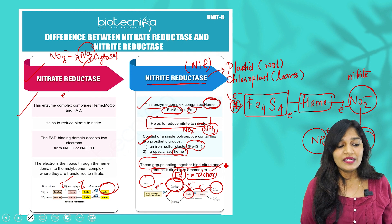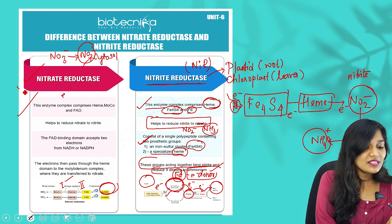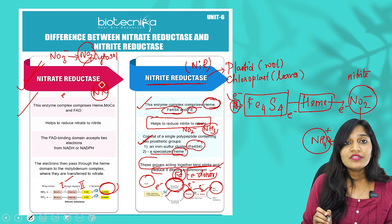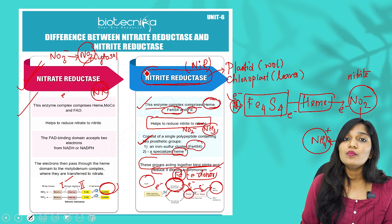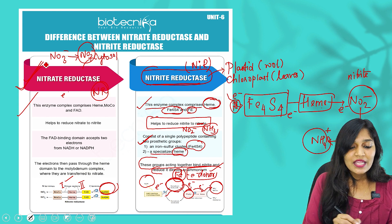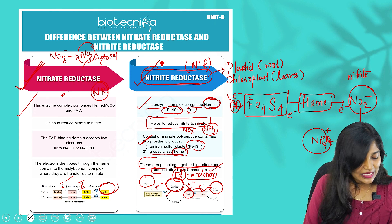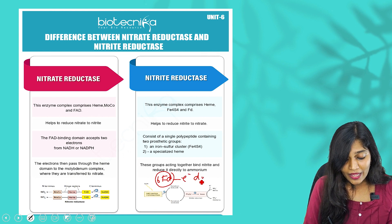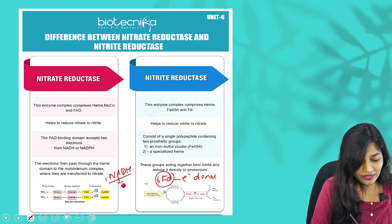This helps us understand the key differences between nitrate reductase and nitrite reductase. Nitrate reductase (NR) takes place in the cytosol and converts NO₃⁻ to NO₂⁻; its electron donor is NADH, and one NADH is required. Nitrite reductase (NiR) takes place in plastids or chloroplasts and converts NO₂⁻ into ammonium ions; its electron donor is ferredoxin, and six ferredoxins are required as the reducing power.